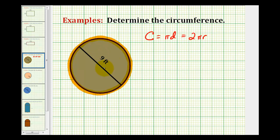So in this problem, since we're given the diameter as nine feet, the distance from here to here passing through the center of the circle, we'll use this first formula to determine the circumference.